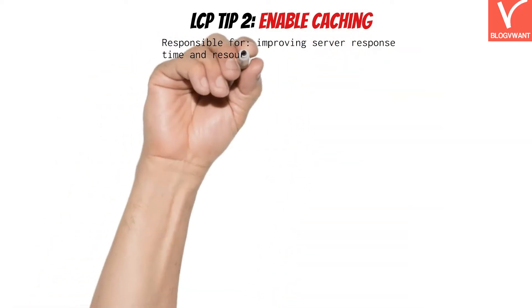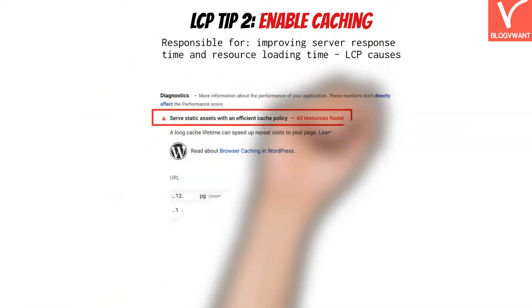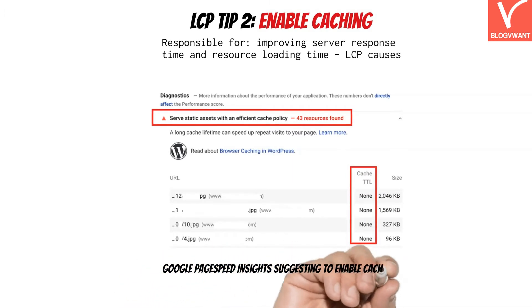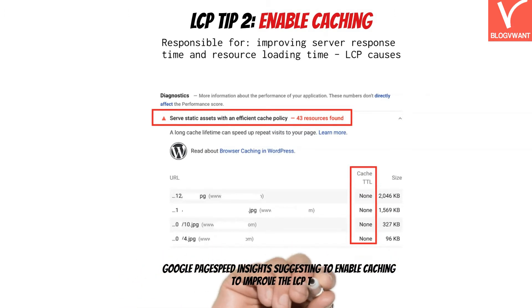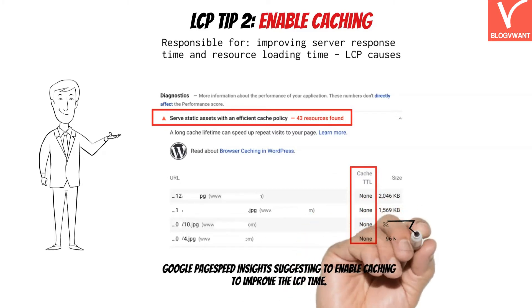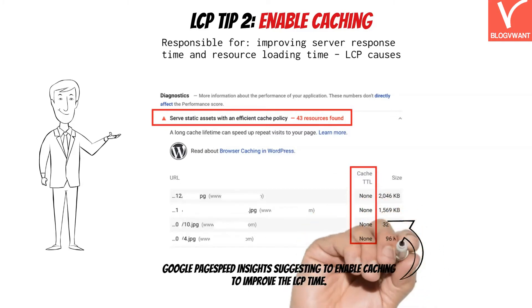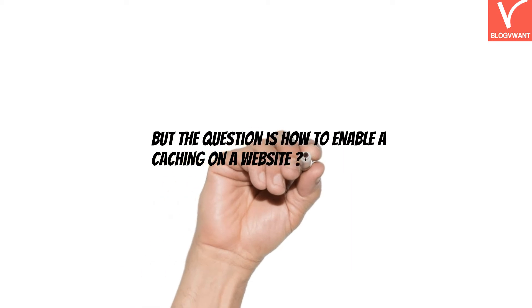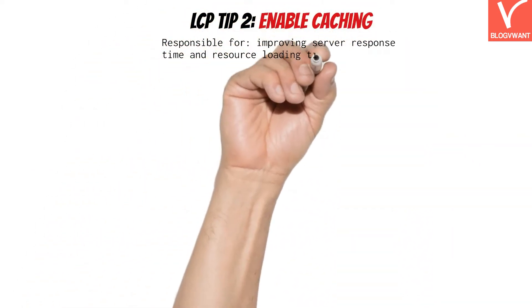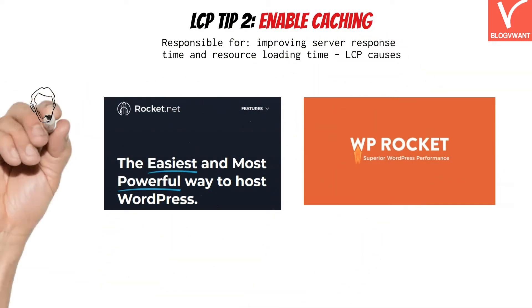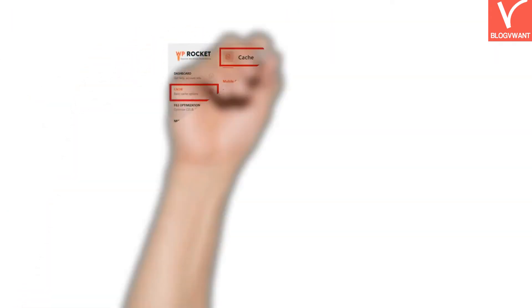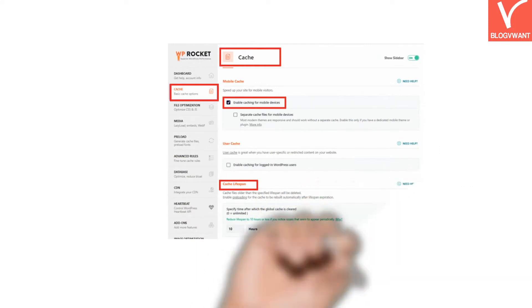LCP Tip 2: Enable caching. If you are facing this error in the Google PageSpeed tool, it's time to implement caching on your website. Websites without caching cause LCP issues badly. Caching is storing the website files temporarily rather than requesting them again and again from the server. This makes a huge impact on server response time and reduces the burden of the server. The safest and recommended method is either using web hosting like Rocket.net, which turns on page caching by default, or using a caching plugin like WP Rocket, which also helps with further optimizations beyond just caching.